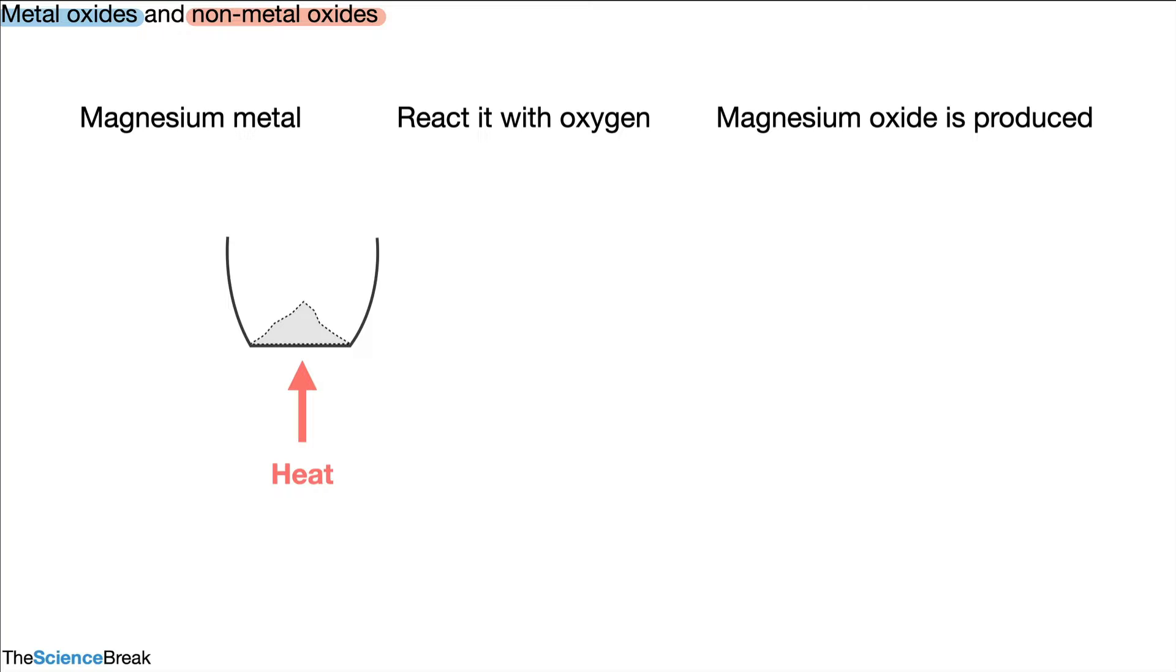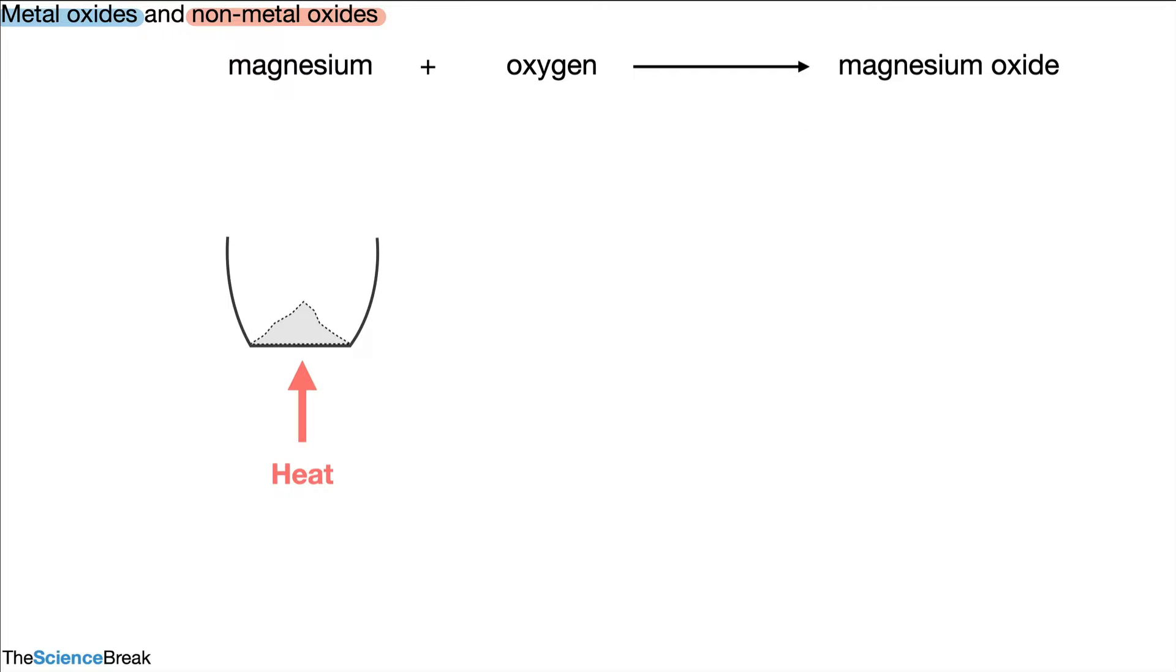We can take the little description above and write it as a word equation. It's a simpler way of describing that reaction: magnesium plus oxygen gives magnesium oxide. That is our metal oxide. In this case the example is magnesium oxide.